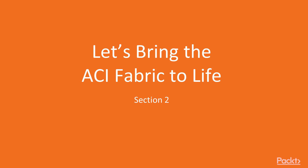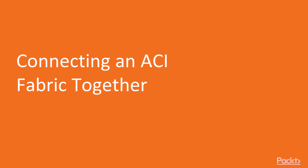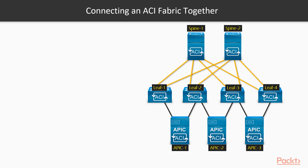Let's continue on to section two - bringing the ACI fabric to life. As we discussed in the previous section, the APIC automates and orchestrates all configurations in our fabric. All leaf configs, BGP reflector settings, and other settings across the fabric are pushed from the APIC. We can configure objects, rules, bridge domains, endpoint groups, and contracts through the GUI, or use API calls via a Python script to automate instructions.